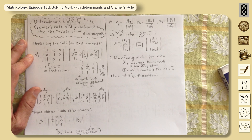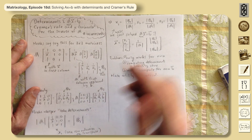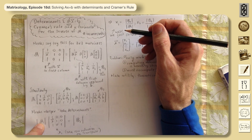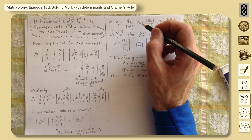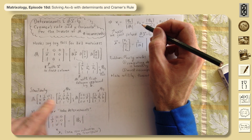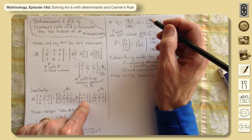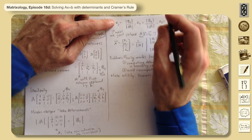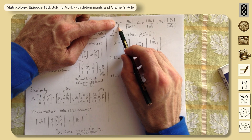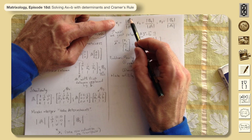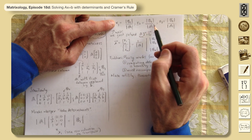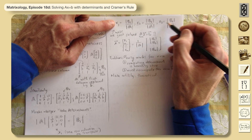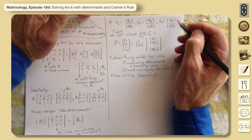So det(A) times x1, the first entry of the solution, equals det(B1). Similarly, taking determinants of the other cases gives x2 and x3. Flipping them around: x1 = det(B1)/det(A), x2 = det(B2)/det(A), and x3 = det(B3)/det(A). We've just solved Ax = b.